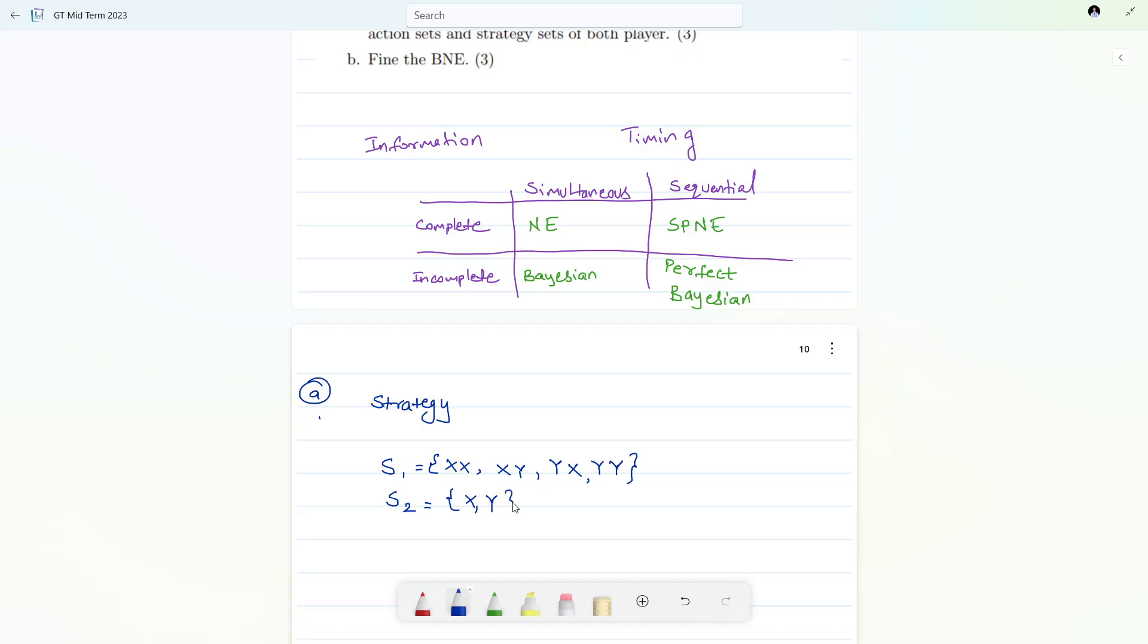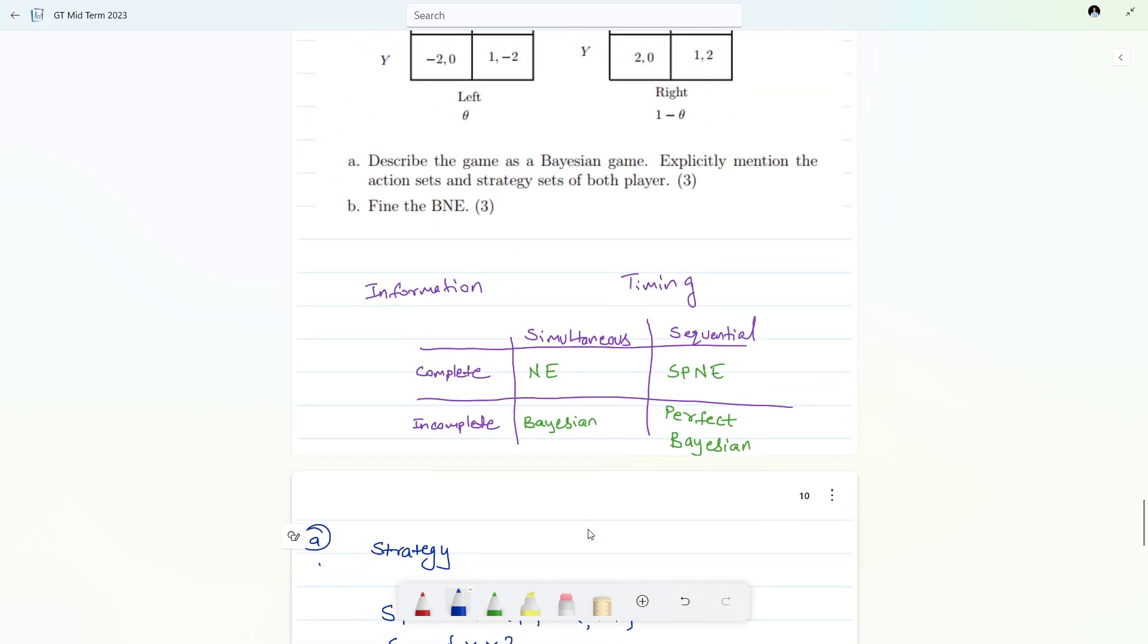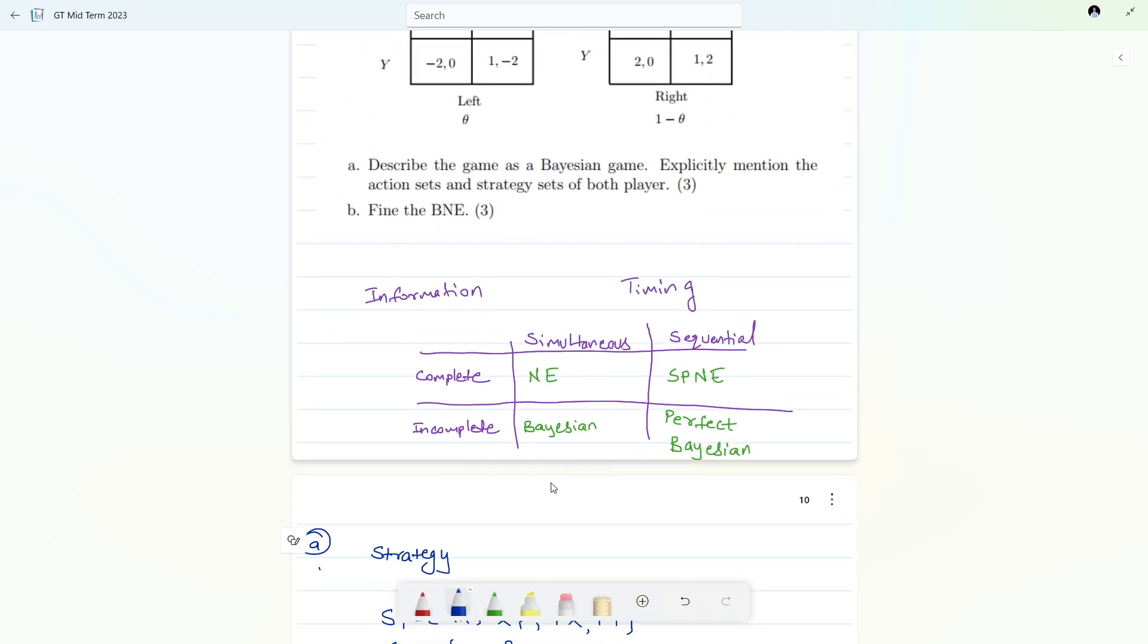For player two the strategies are simple: X and Y, only X, only Y. Now if I talk about action sets, X, then player one has only one X,Y. Even player two also X,Y.